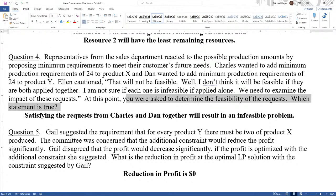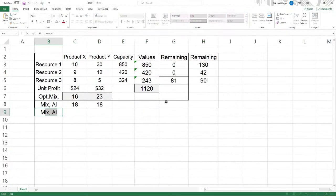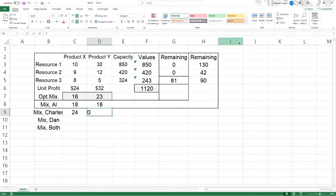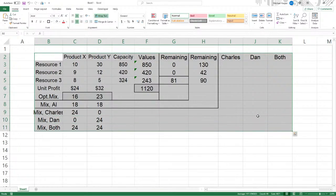So it's 24 and 24, so let's do this. We want a mix of Charles. We want a mix of Dan. We want a mix of both. And it was 24, 0, 0, 24, and 24, 24. So over here, let's look at the remaining of Charles, the remaining of Dan, and the remaining of both. Let's just do that over here. Let's go box that in because that's going to be the answer of this one.